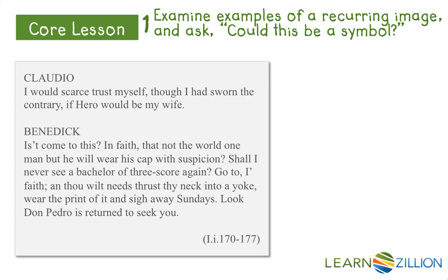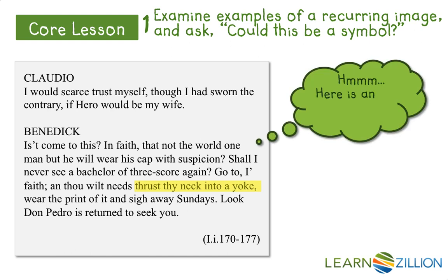We see that the word yoke is also mentioned in an earlier passage, when Benedict is speaking with Claudio about Hero. Benedict seems to be using the term in much the same way Don Pedro did, but I don't think they are referring to the same physical yoke that the necks of draft animals are placed in. What does he mean? We will look at meaning next.